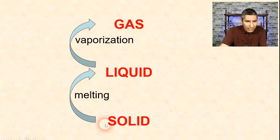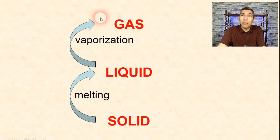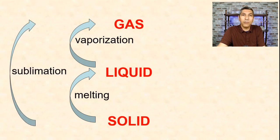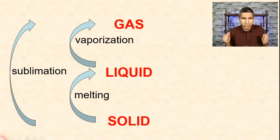Is it possible for a solid to change directly to a gas without becoming a liquid first? The answer is absolutely yes, and that process is called sublimation. A good example is dry ice — solid carbon dioxide. If you've ever seen dry ice, you can see that it turns directly into a gas without really turning into a liquid at all. It just sublimes, undergoing the sublimation process.